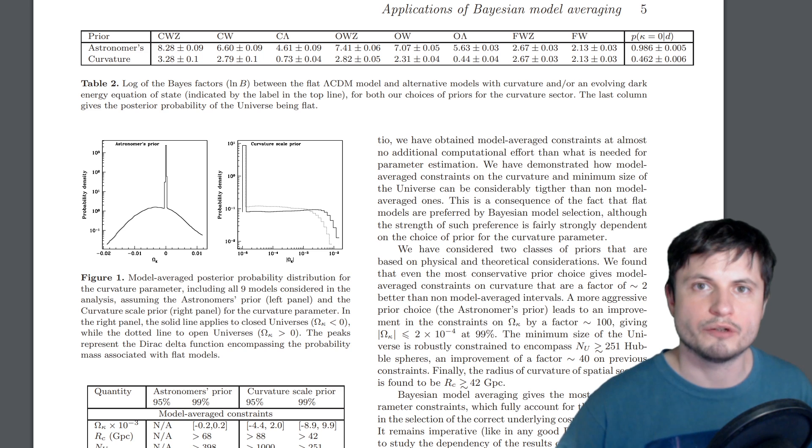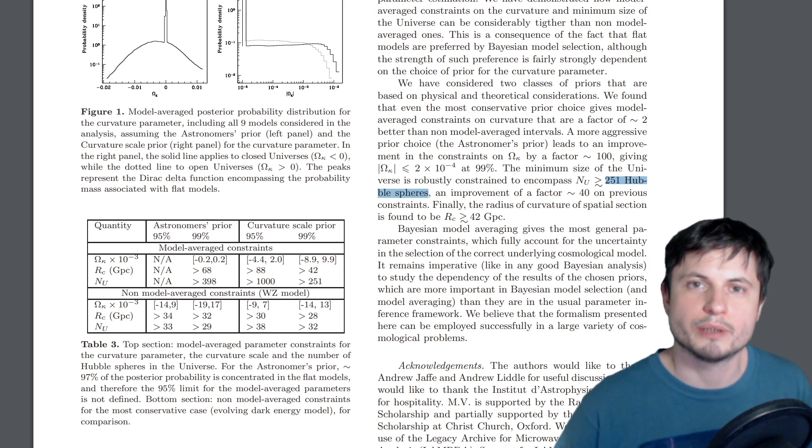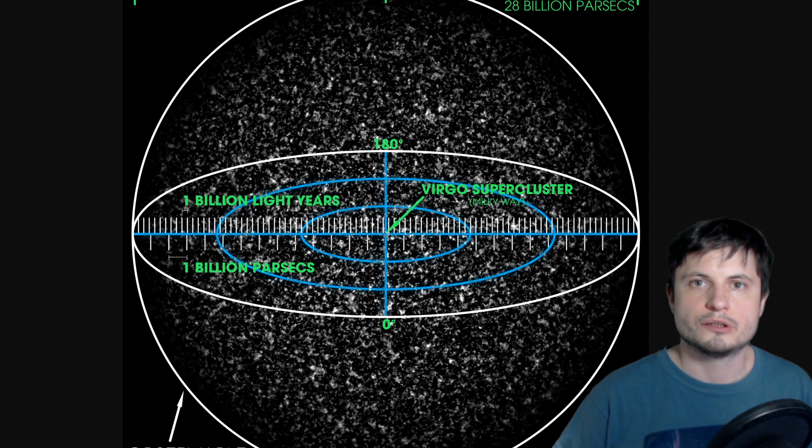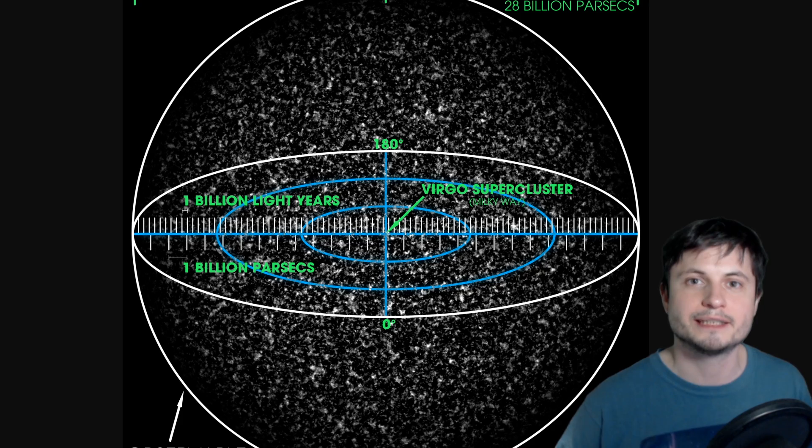And they came up with the value of roughly around 251 Hubble spheres, or essentially 251 times the observable universe. So take this, multiply by 251. And so according to this study, the universe is roughly around 23 to maybe 24 trillion light years across.